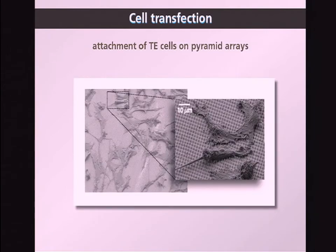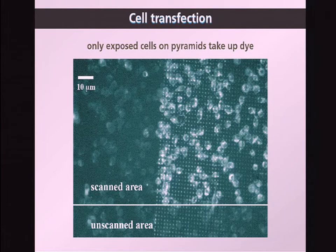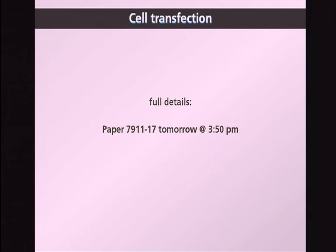We verified that cells would attach to these substrates — here you see human tumor cells attached on top of these pyramids. In an experiment whose details we'll report tomorrow, we took a substrate, illuminated the top with femtosecond laser pulses while the bottom was kept in the dark. Only the part with pyramids showed uptake of a membrane-staining dye by the cells, demonstrating very high efficiency, very high throughput, and low toxicity — exactly what we want. Full details tomorrow at 3:50.